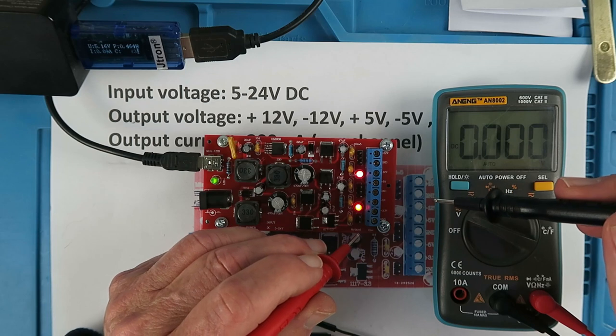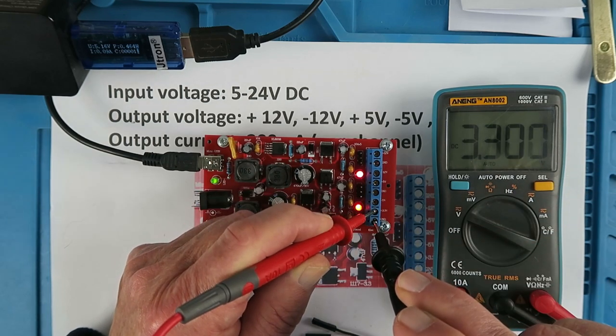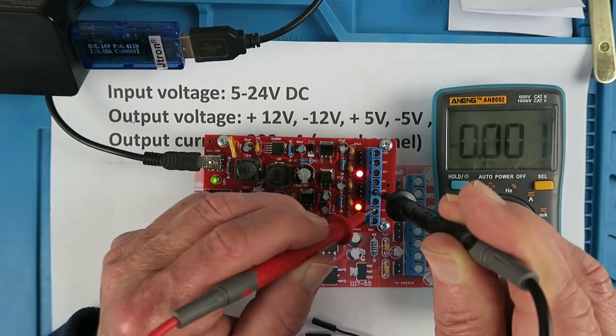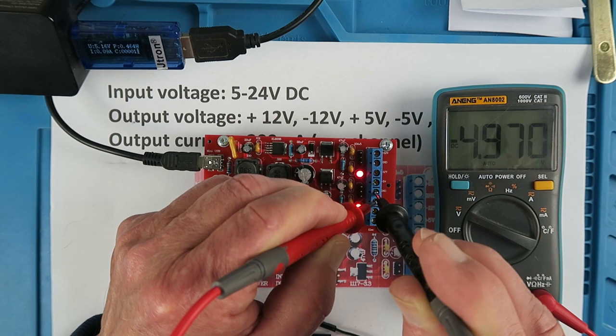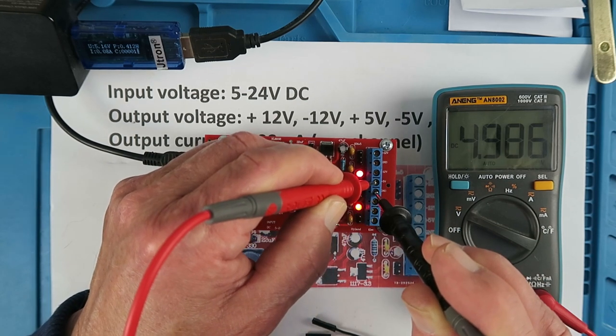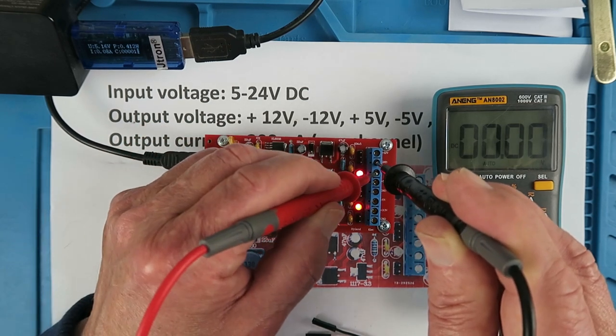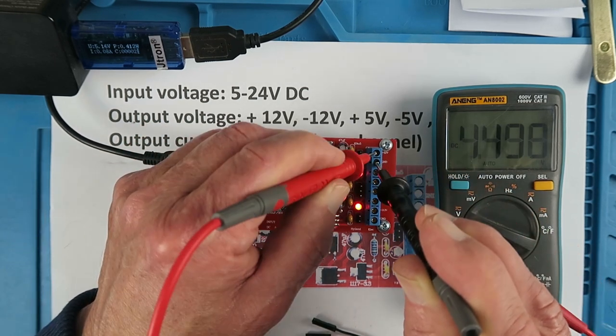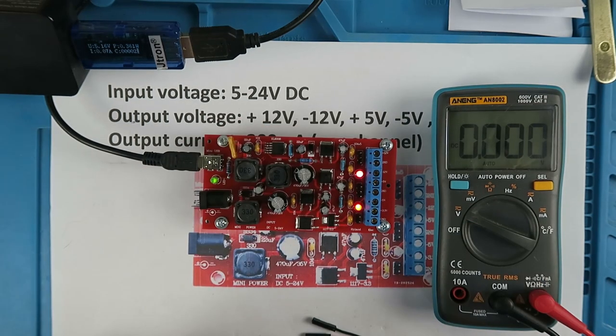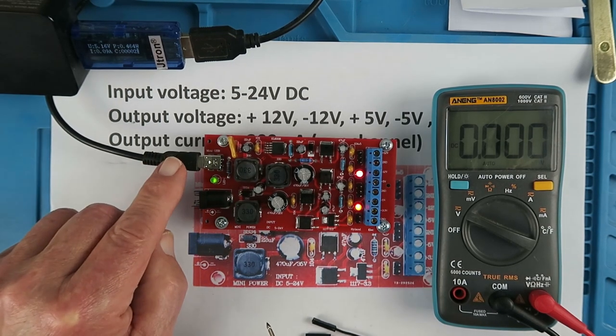So down here we should have ground and plus three. Excellent. Here we have ground in the middle. Minus five and plus five so pretty much spot on there. And finally our minus 12 and plus 12, 11.95. Those voltages are within tolerance of what we need considering we're using the five volt input.